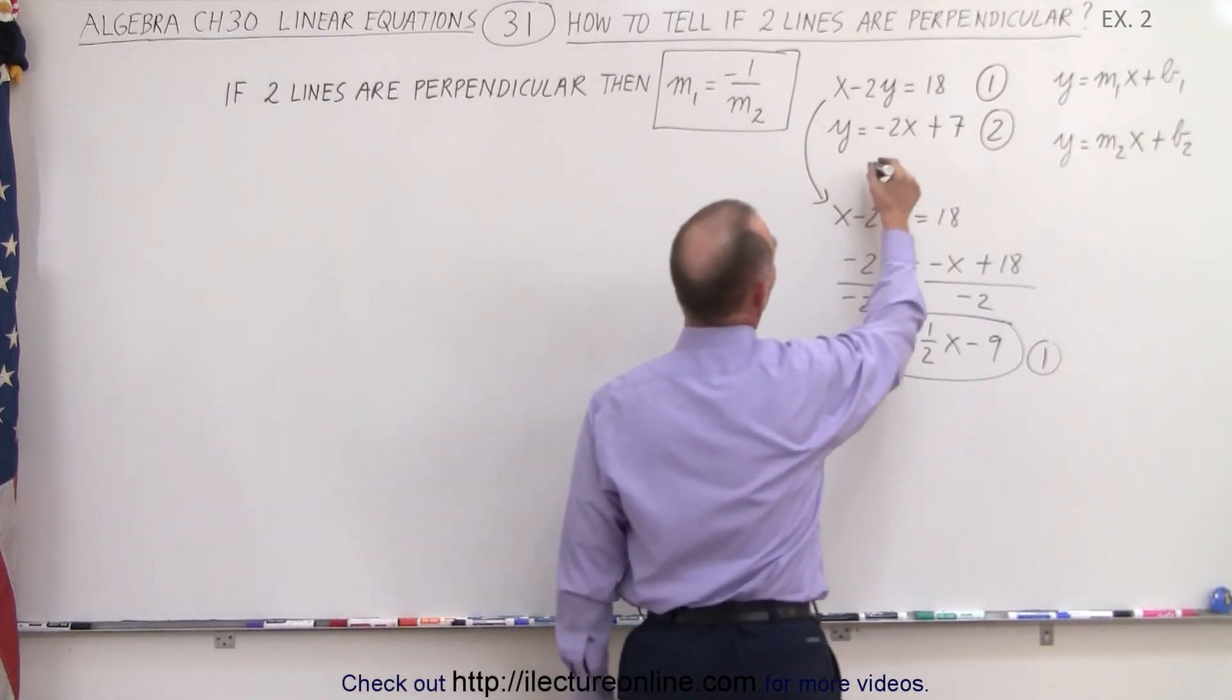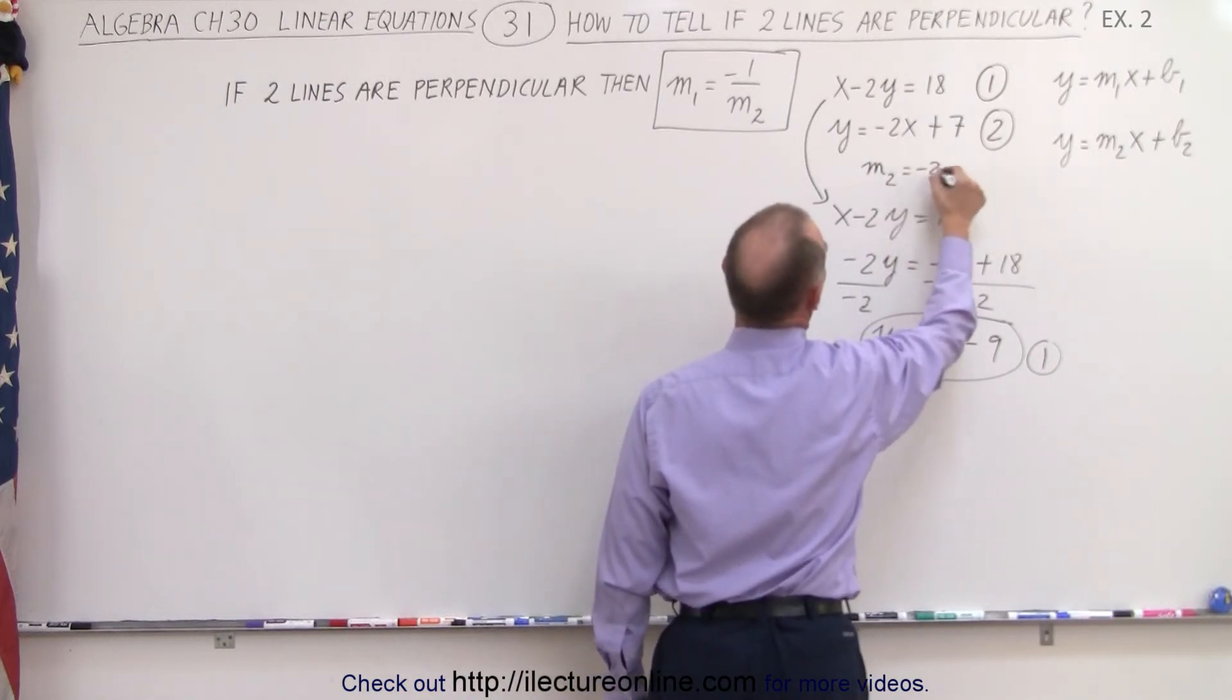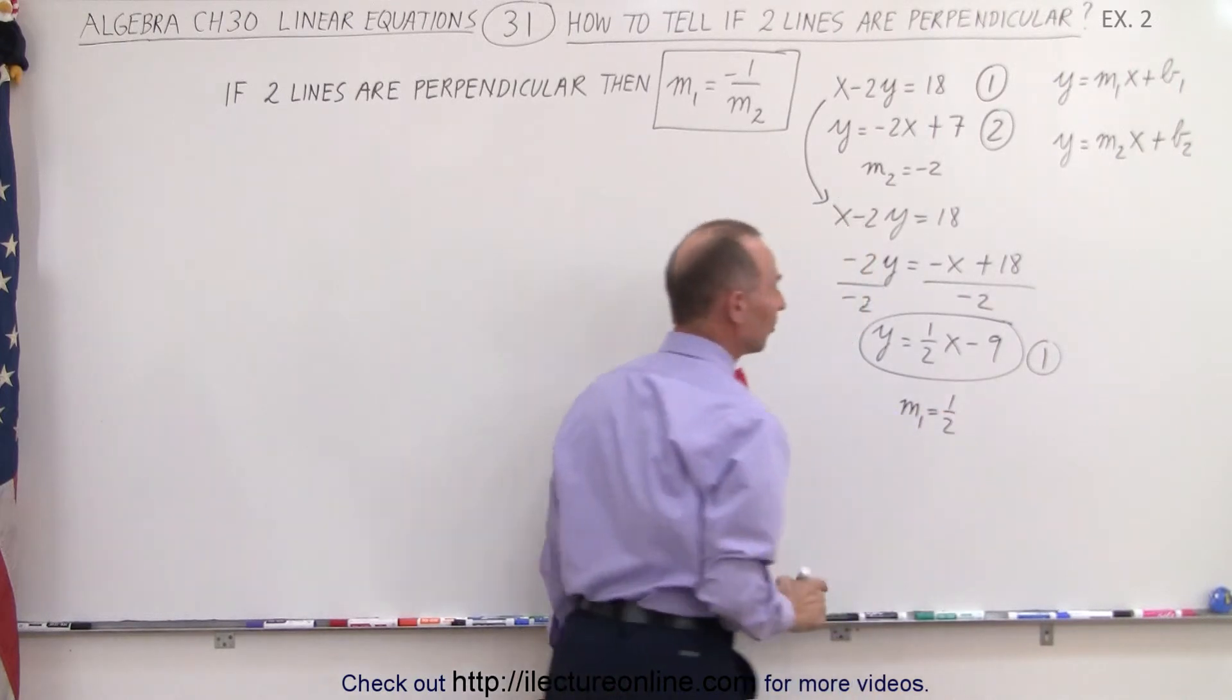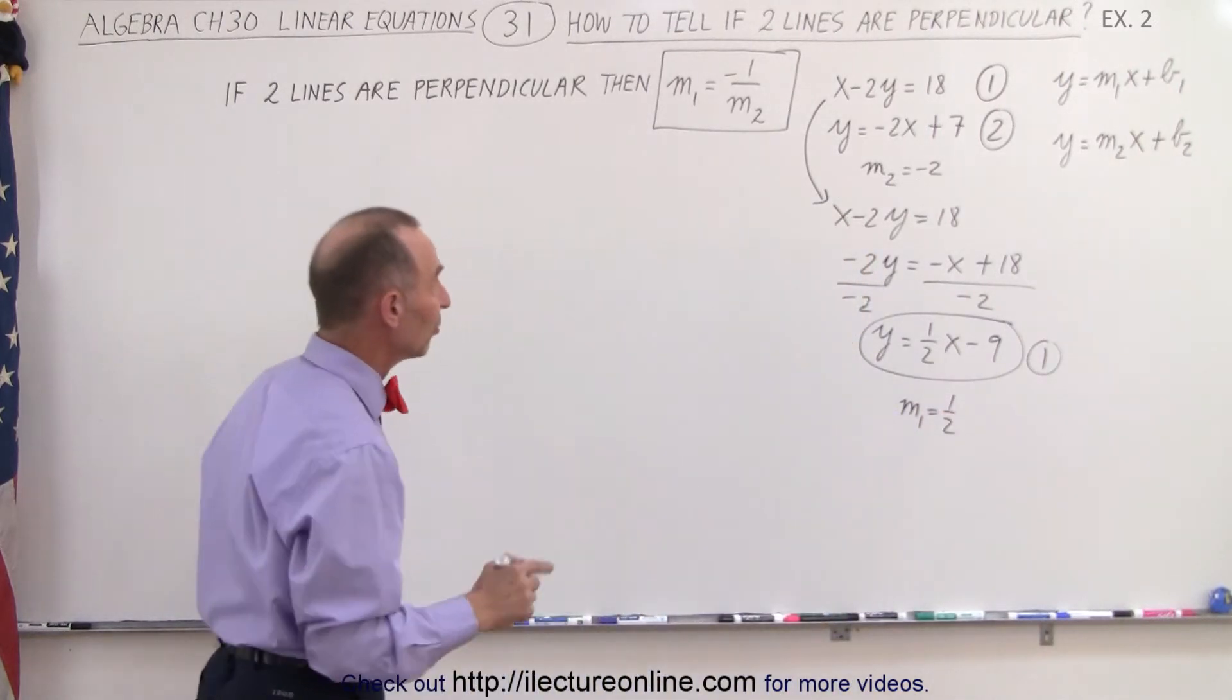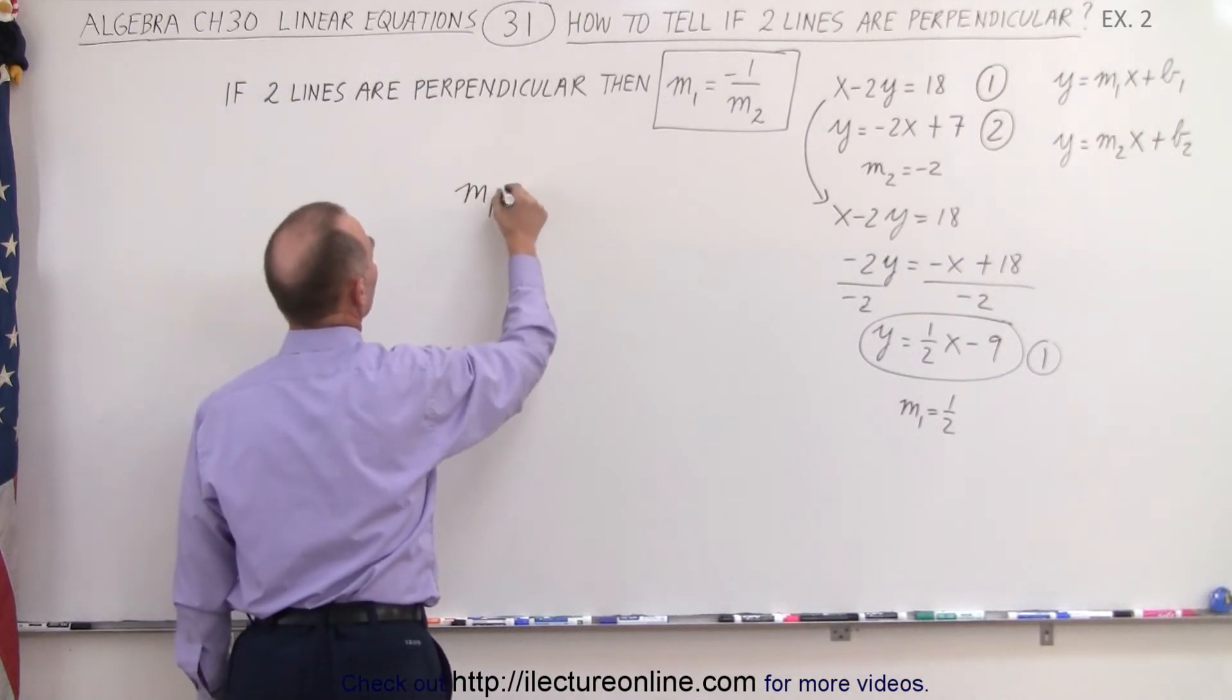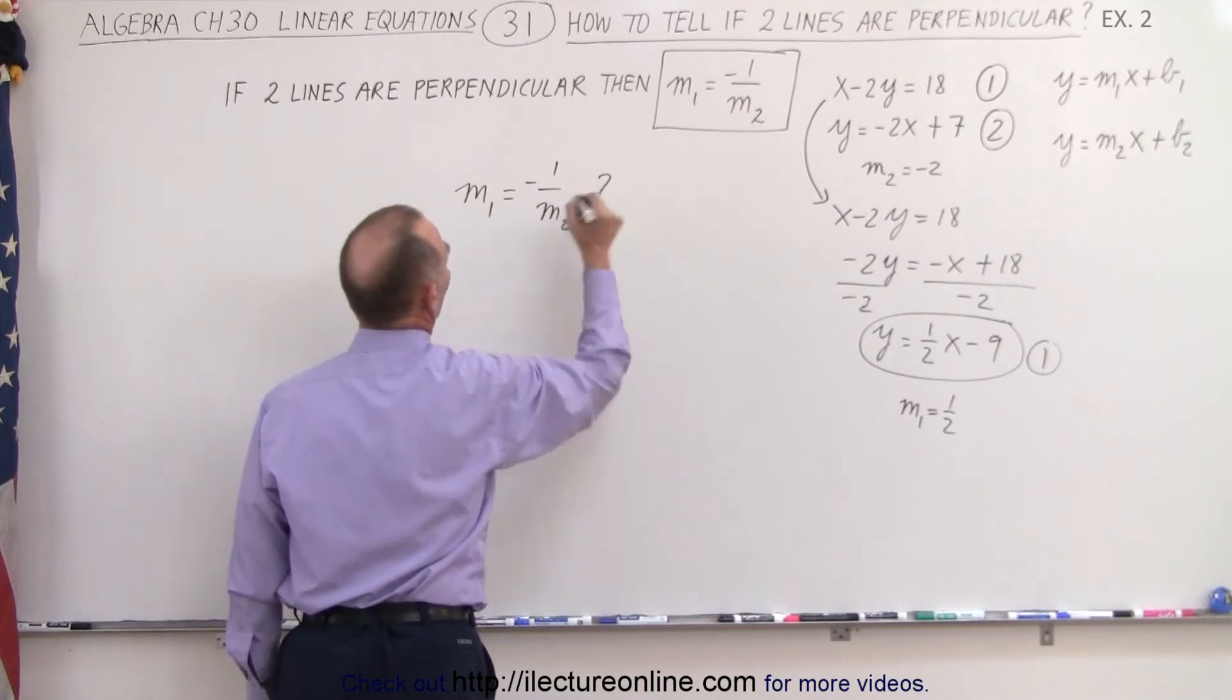So we can say that m1, or this is m2, right? m2 is equal to negative 2, and here we can say that m1 is equal to one-half. So now that we have the slope of both equations, let's plug them into the condition. So I want to see that m1 is equal to minus 1 over m2, and so that's going to be the question.